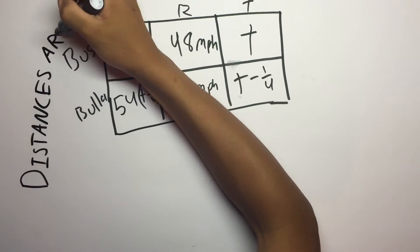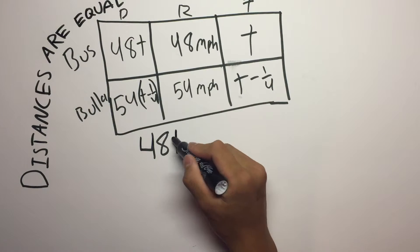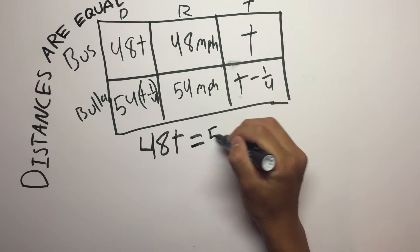We're trying to find out if it is equal. So both distances will be equal in this sense. So 48T equals 54 times T minus one fourth.